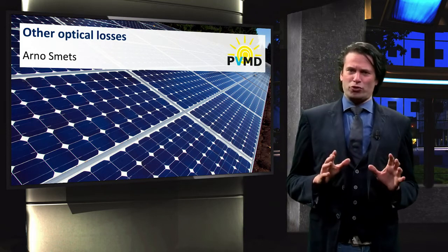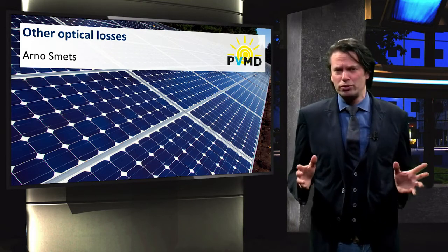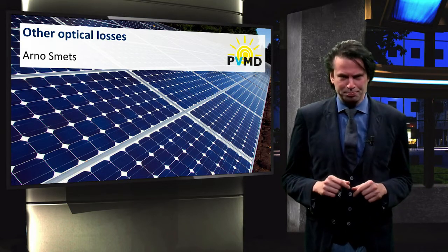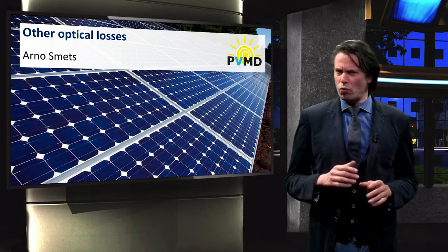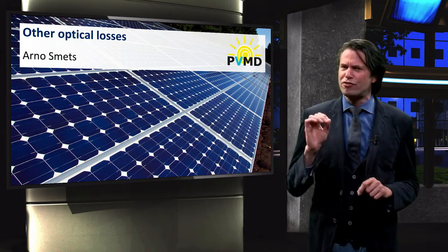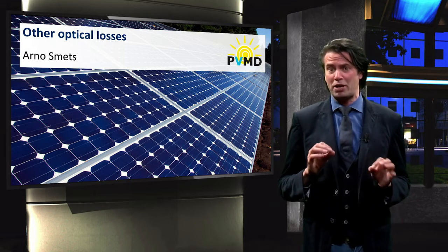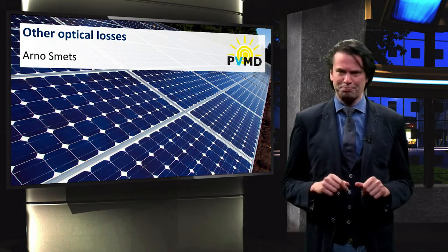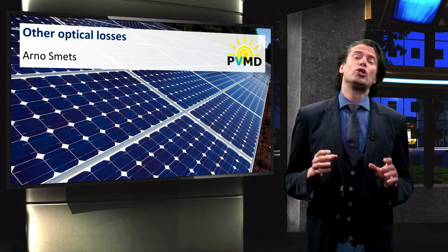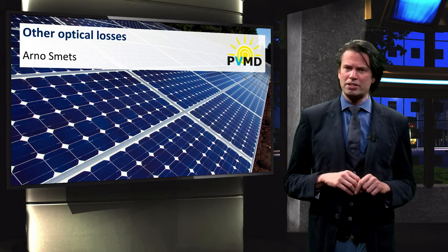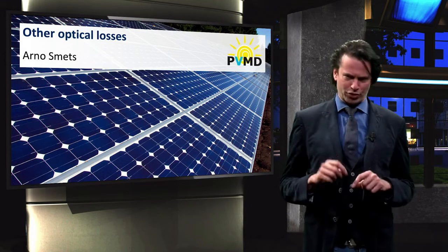We would like for every single photon incident on our solar module to contribute to the generation of free charge carriers. In the previous video we found that there is a fundamental theoretical limit to the fraction of the available spectrum that a solar cell can utilize. In this video we will look into the other optical loss mechanisms that further limit the optical performance of a solar cell.